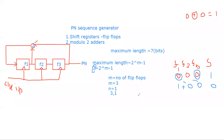Based on this PN sequence generator, we will examine some properties. The first property is called the run property. The different properties of the PN sequence will be discussed in the next lecture. For now, understand that to design a PN sequence generator for maximum length seven we need three flip-flops and one modulo-2 adder. If the maximum length changes — say to 15 or 20 — the number of flip-flops and modulo-2 adders will change accordingly. The properties of the PN sequence generator and its application in DSSS and FHSS spread spectrum techniques will be covered in the next lecture.